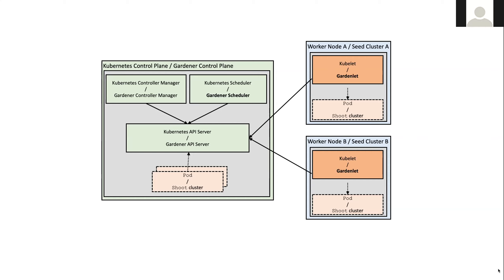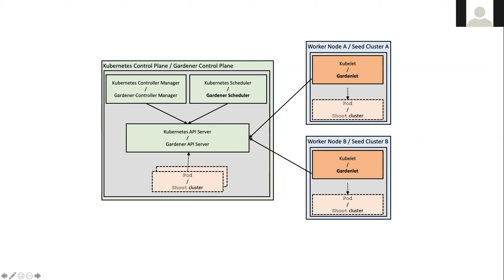The Gardenlet reconciles only those shoots that are scheduled to its dedicated seed. Why do we do this? Mainly for scalability reasons. In the past, we had a central Gardener controller manager that reconciled all shoots and all seeds. In order to scale beyond thousands of clusters, we already knew we had to distribute this logic. Now was a good time to introduce it. The shoot controller is now running once per seed and doing much less work because only a fraction of the shoots is on one seed. This also opens up the possibility to run seed clusters behind firewalls — we no longer need connectivity from the garden cluster to the seeds and shoots, but only vice versa from the seed to the garden.